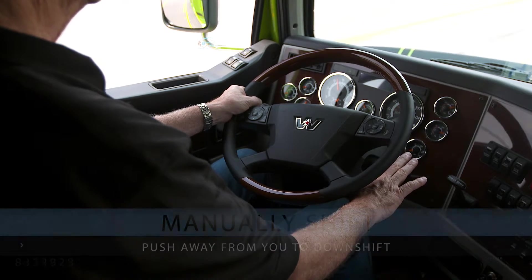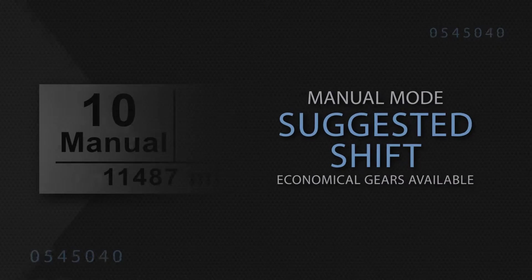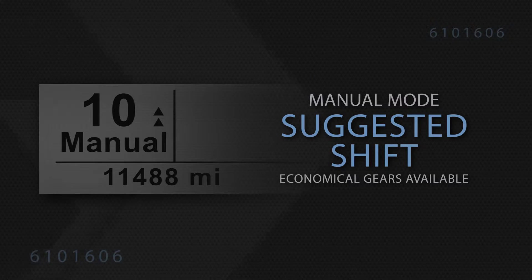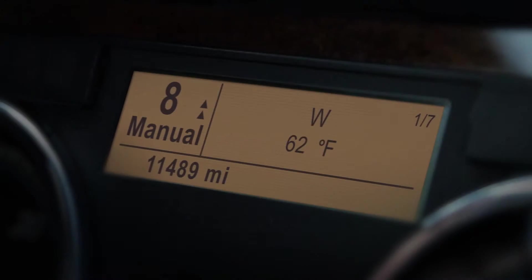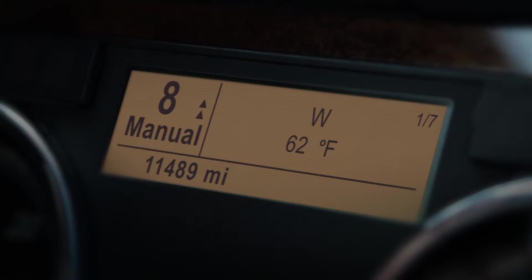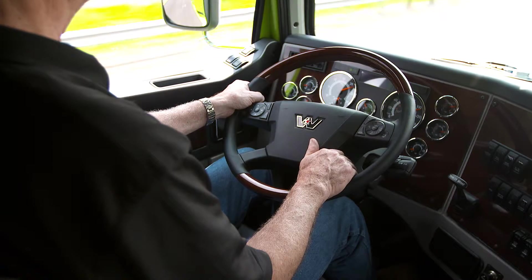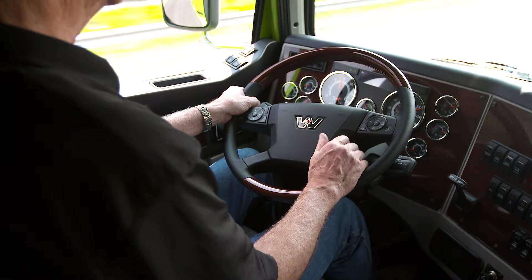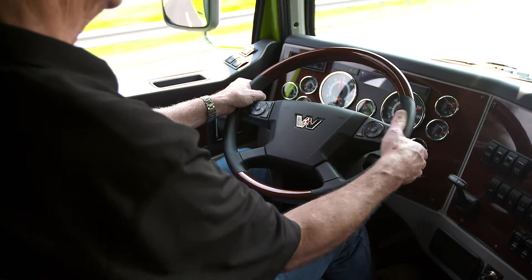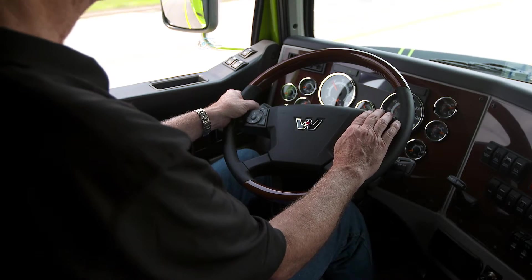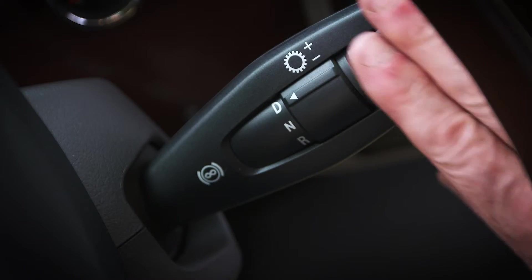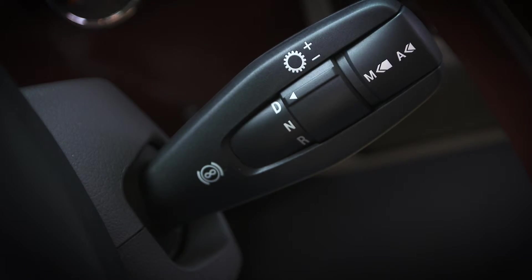In manual mode only, a suggested shift is displayed to indicate the most economical gear available. The suggested shift is the number of up or down arrows from the current gear, with a maximum of two up or down arrows. If you have two up arrows on the dash, you can pull the shifter stock towards you and hold to upshift to the highest gear available. The same method can be used for downshifting in manual mode.